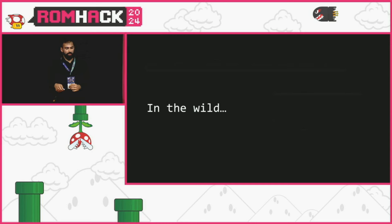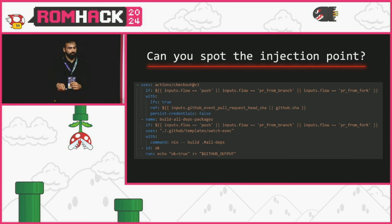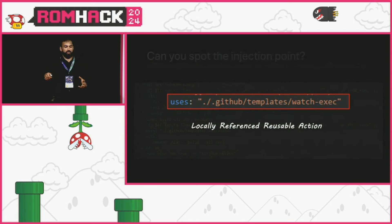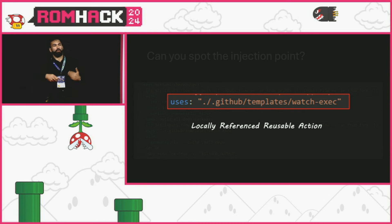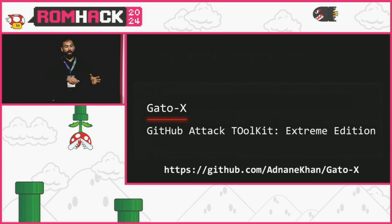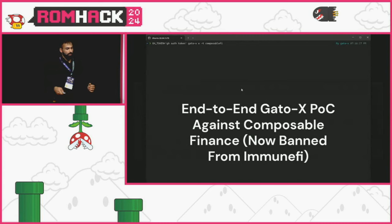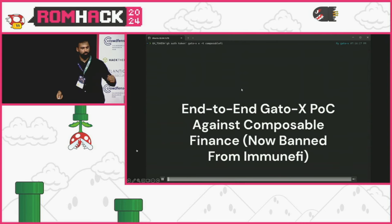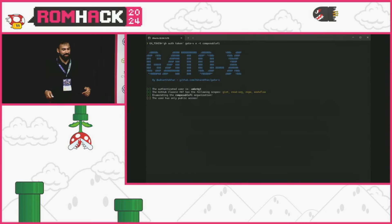Let's look at an example in the wild — a PwnRequest. This workflow uses a locally referenced action under the .watchexec directory, where there's an action.yaml file. If an attacker modifies that to contain their own code, they can run arbitrary code within the workflow. I'm going to show how I found this vulnerability using GatoX against Composable Finance — they're now banned from the Web3 bug bounty platform Immunify because of how they handled my reports.